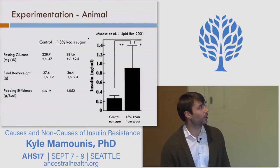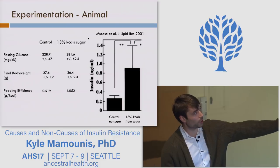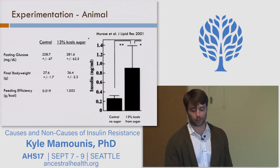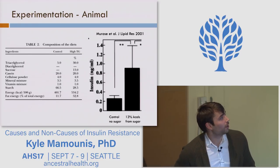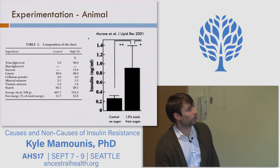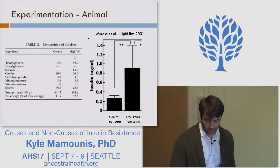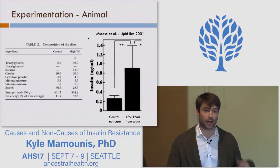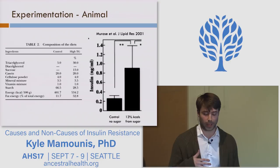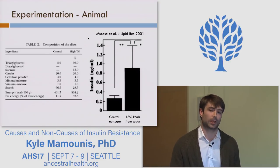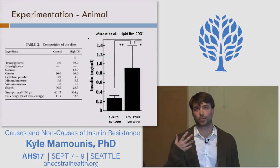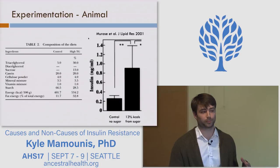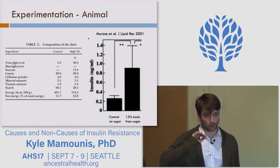Moving on to experimentation. Remember that mouse experiment — no sugar versus 13% of kilocalories from sugar? I tricked you, because the 13% sugar group also had 30% of their calories from triglycerides. It was a high-sugar and high-fat group compared to a low-fat, mostly-starch control. This is what you see in 99% of animal studies on PubMed — in order to induce obesity and insulin resistance in animals, they always combine sugar with fat.